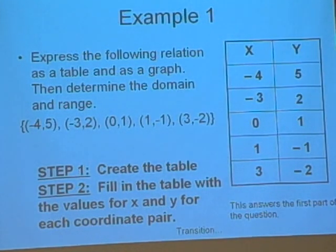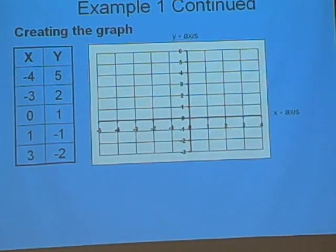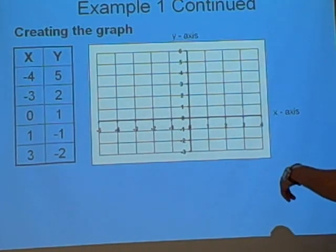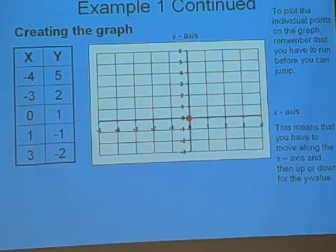This answers the first part of the question. The second part, as a graph. We take that table and we graph those points. So we've got a piece of graph paper. We've got to graph the first point, (-4,5). Remember, you have to run before you can jump. So that first one, we go to the left 4 and then up 5. And that's our first point. Second point, starting off at the origin, to the left 3, then up 2.